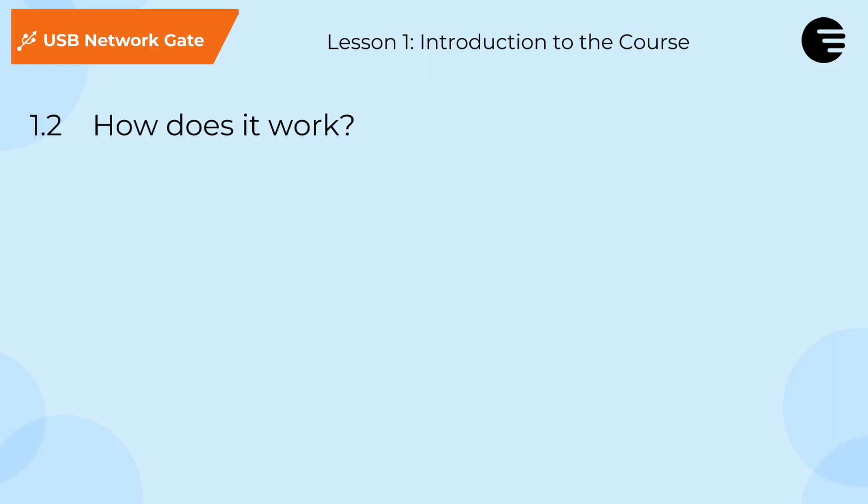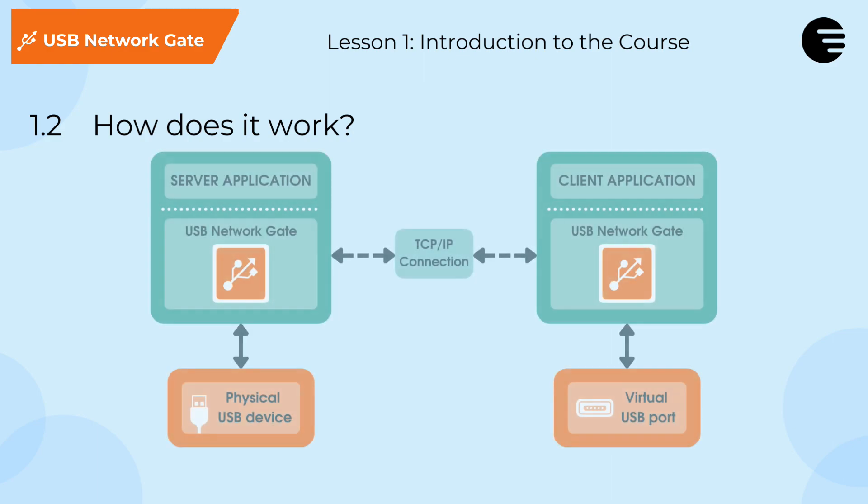USB Network Gate works by redirecting data streams from the real USB port to which the device is physically connected, to a virtual USB port created on a remote computer. It does this by packaging the USB device data and forwarding it to the remote machine over the TCP/IP protocol. The data is received and extracted by a virtual USB port running on a remote application you must create, which will also be using an instance of USB Network Gate. The USB Network Gate framework allows the physical USB device to communicate with the virtual USB port, and the device will be treated by the remote system as a locally connected device.